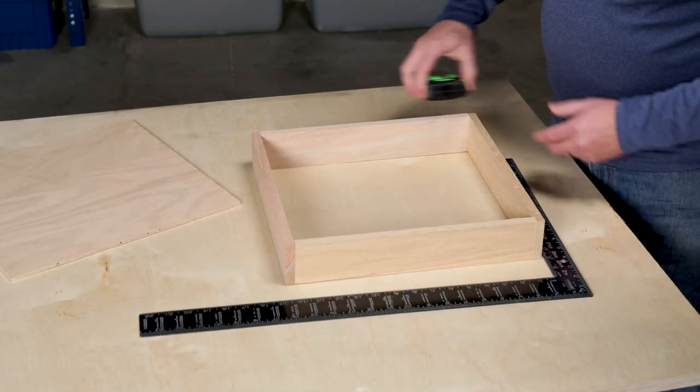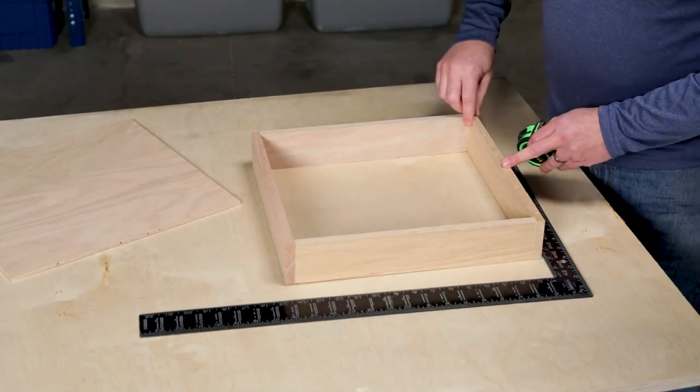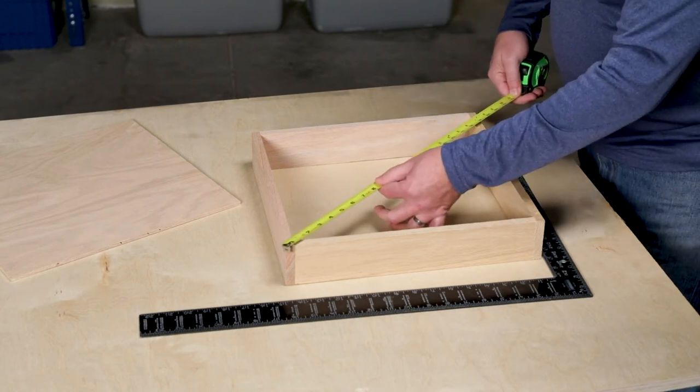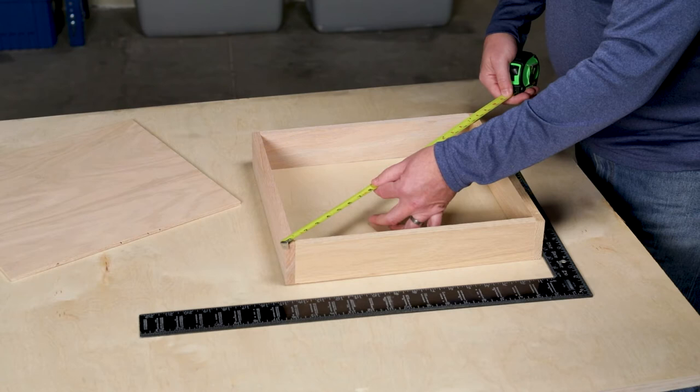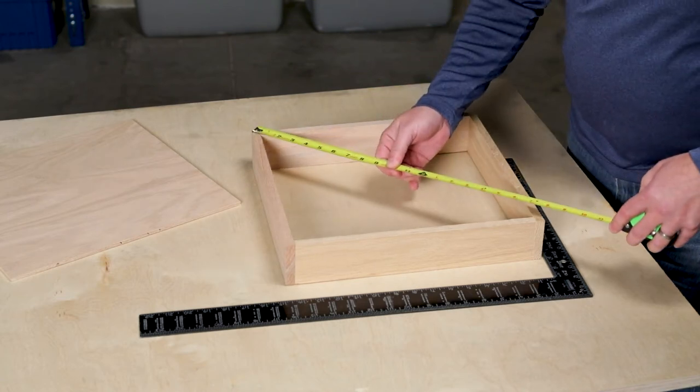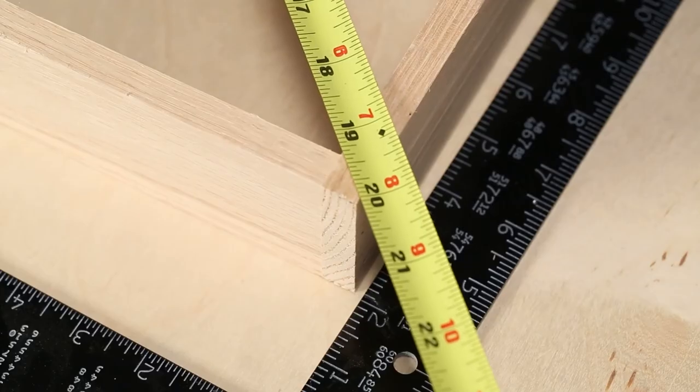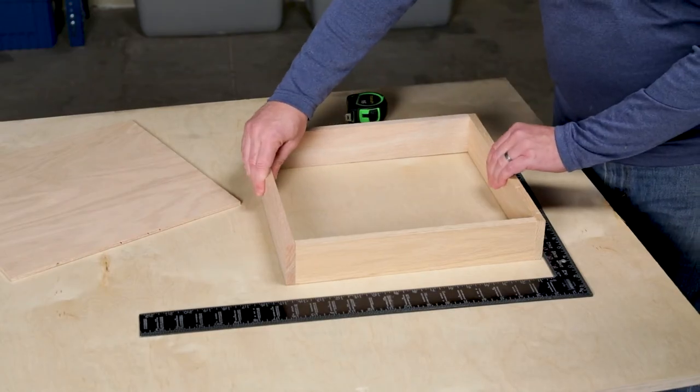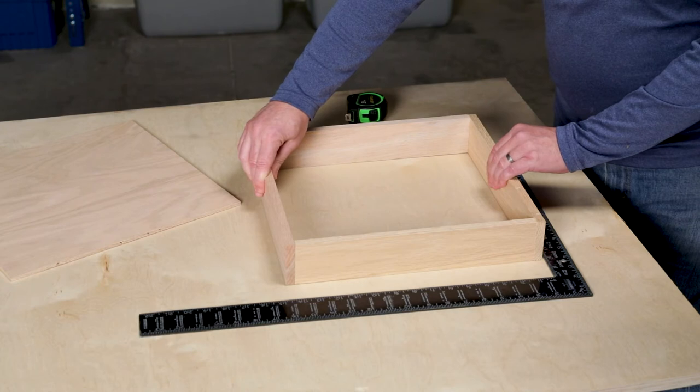Another way to check is by measuring the diagonals. If it's square, they'll be the same. So here I've got about 20 and 3 sixteenths, and here it's right on 20 inches. So again, going to have to make some adjustments to square it up.